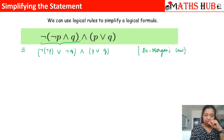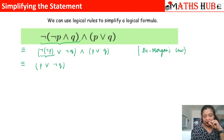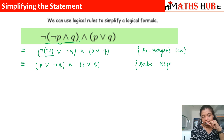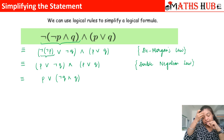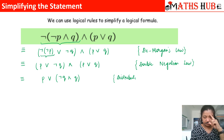In the next step, we apply the double negation law to negation(negation P), giving P. So we now have (P OR negation Q) AND (P OR Q). Next, we can see the distributive law is applicable — P OR (A AND B) pattern — so we distribute: P OR (negation Q AND Q). We write which law was used at each step: double negation law, then distributive law.